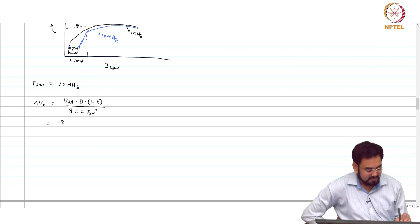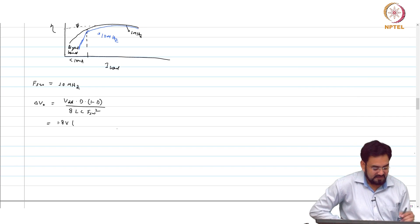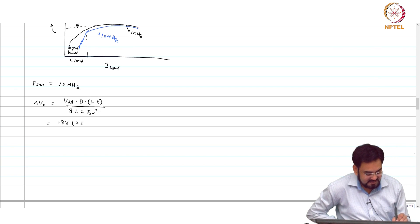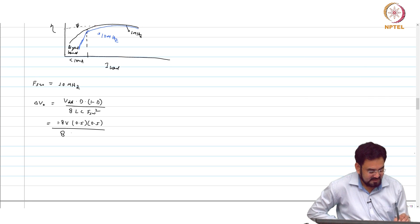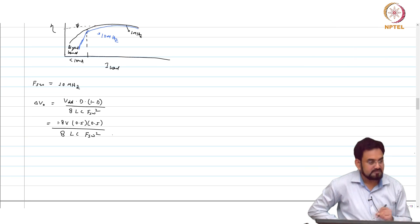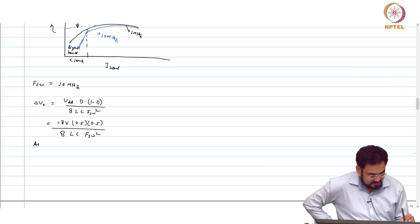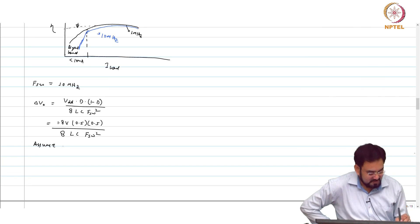VDD we know is 1.8 volt and we know this will be maximum at 50 percent duty cycle. We will take the worst case 0.5 into 0.5 over 8 L C. Let us say my ripple spec is, and this spec will be given, assume delta V out is less than 10 millivolt.